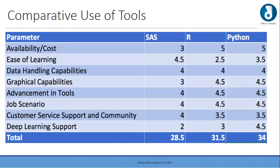Because R and Python are open source, you can access and develop them according to your needs, so they are given 4.5 each compared to SAS which receives 3 due to its closed nature. For advancement in tools, R and SAS are given 4.5 due to scalability. For job scenario, R and Python are given 4.5. For learning and support, Python is given 4.5, while R and SAS are given 2.5 each. The cumulative scores are 28.5 for SAS, 31.5 for R, and 34.5 for Python.